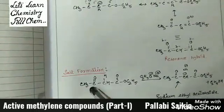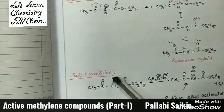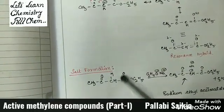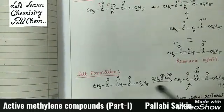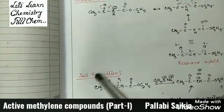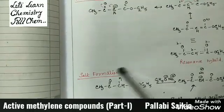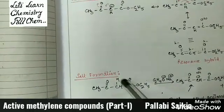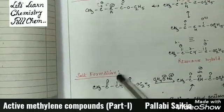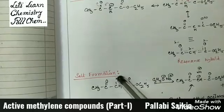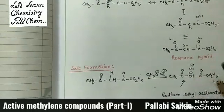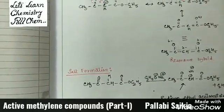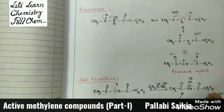Due to this acidity of the CH group, in the presence of a base, ethyl acetoacetate can easily form a salt by losing this proton. This salt is known as sodium ethyl acetoacetate.